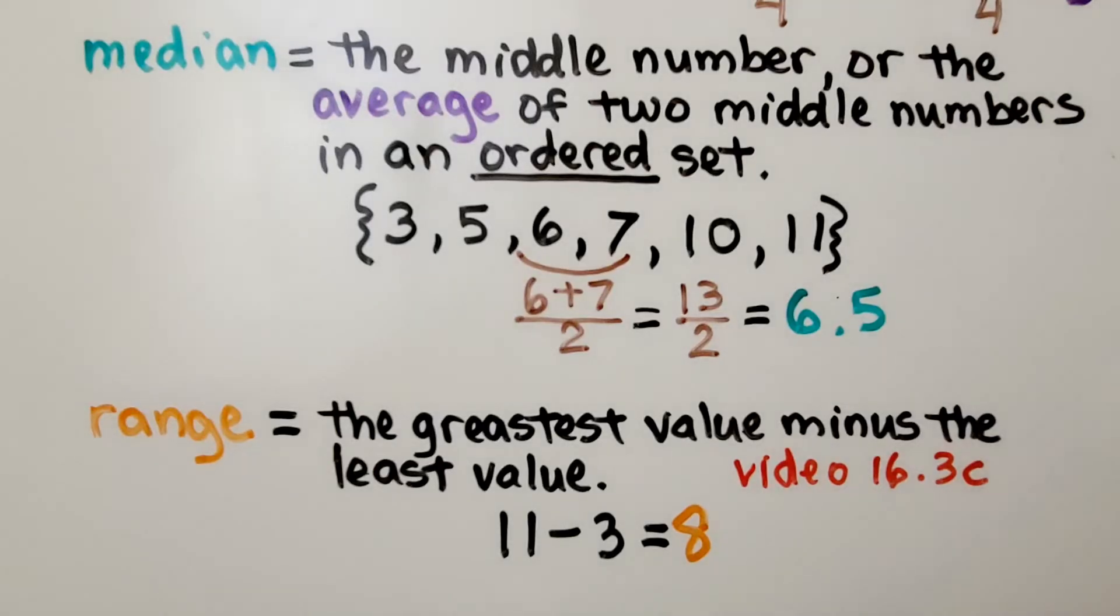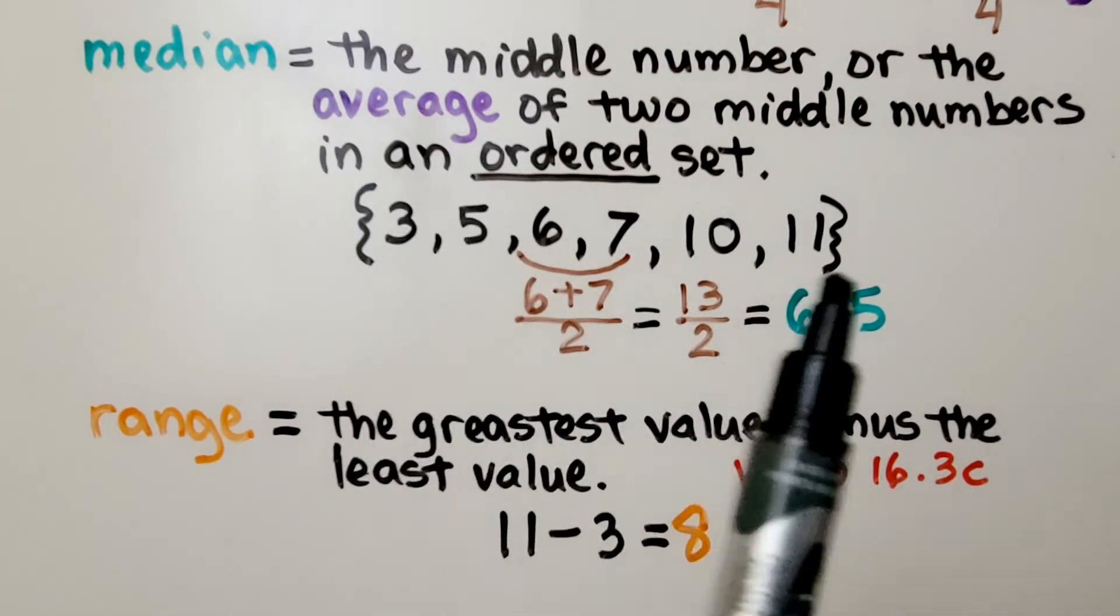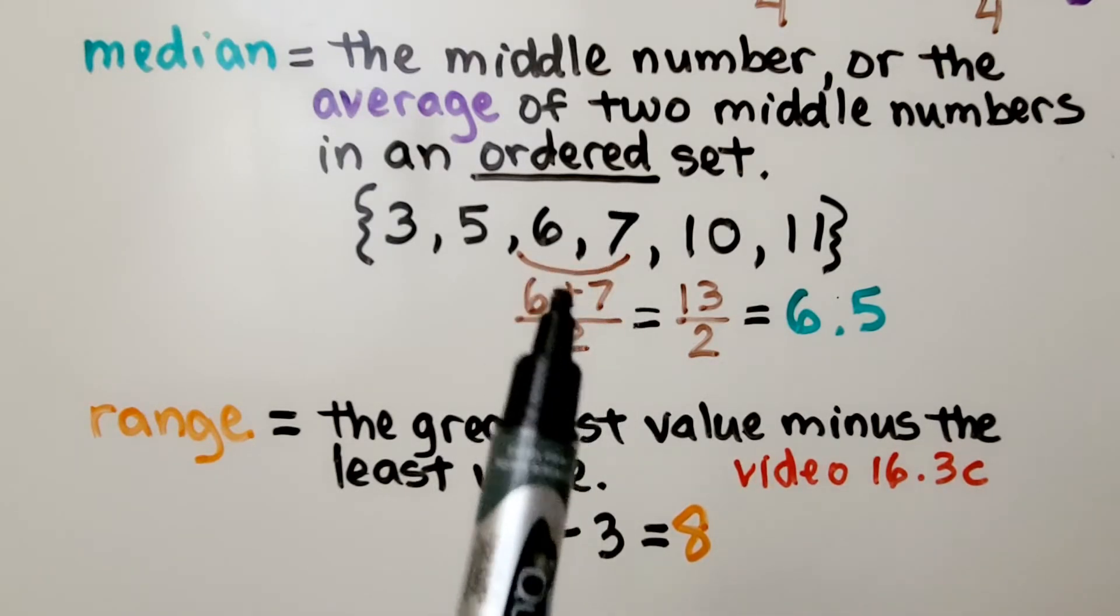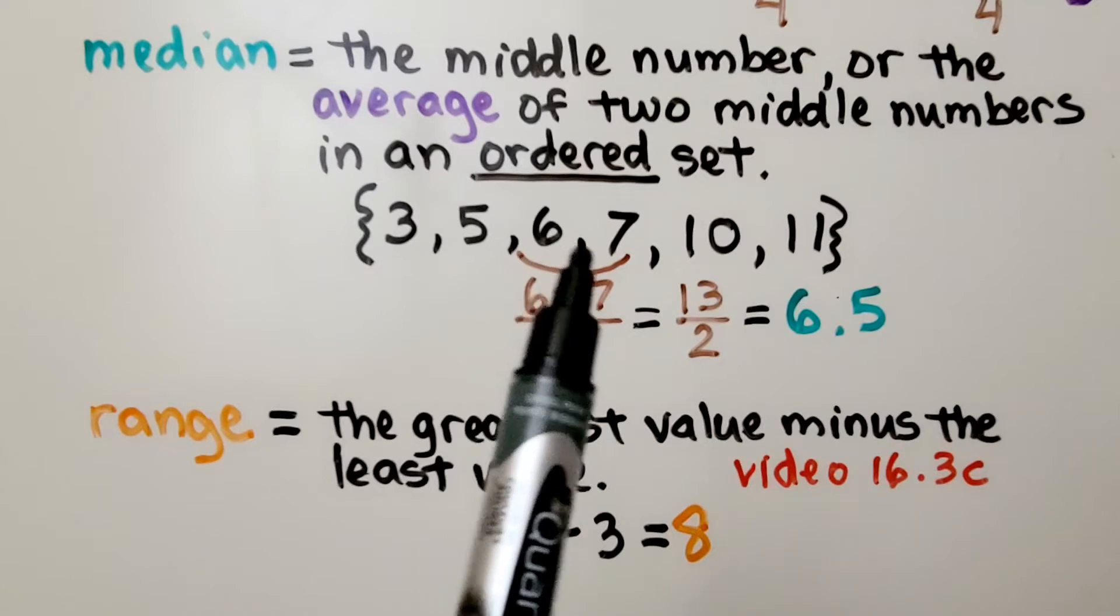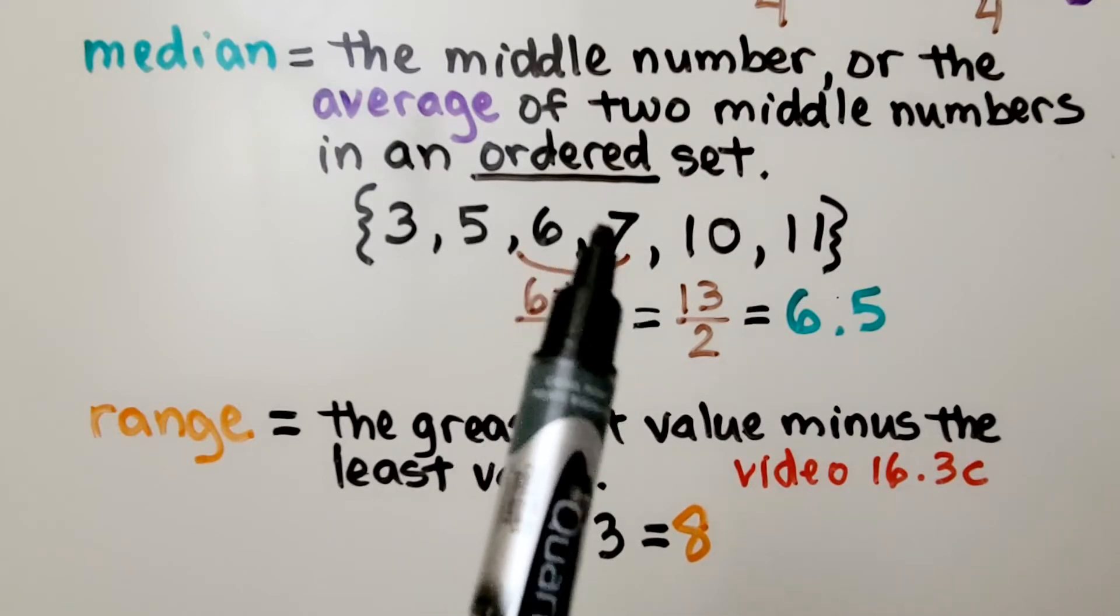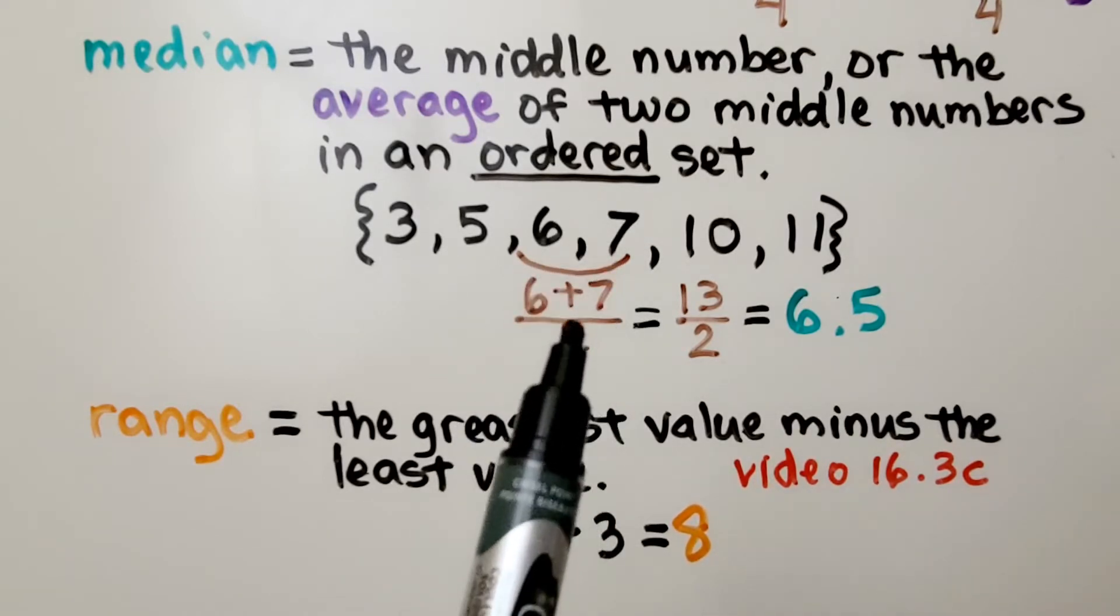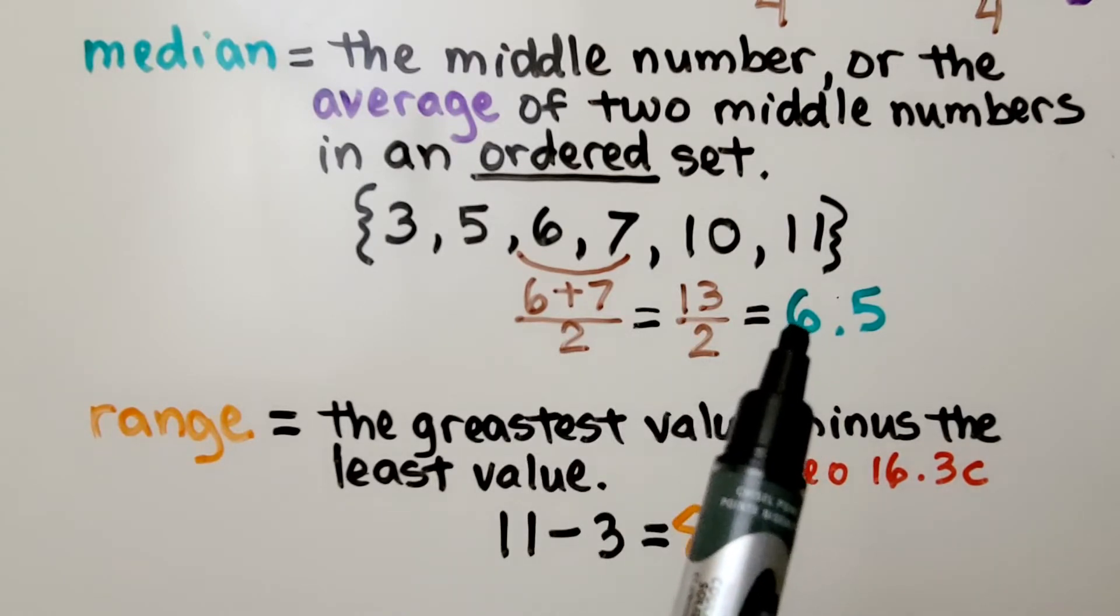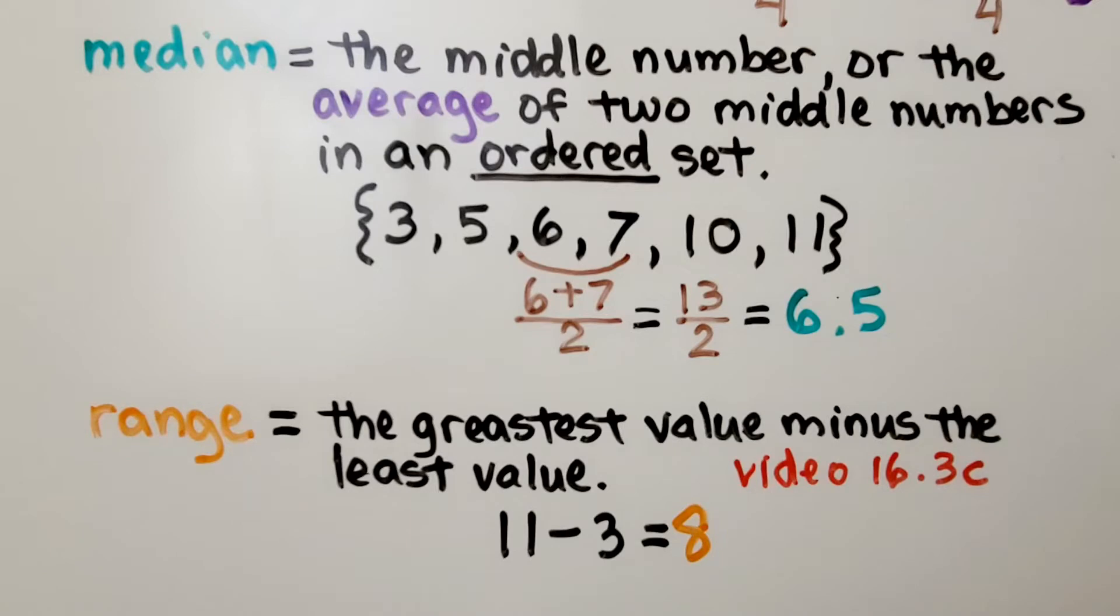The median is the middle number or the average of 2 middle numbers in an ordered set. If we've got an even amount of numbers, we have to find the 2 middle numbers and find the mean or average of those two. Because 6 and 7 are the 2 middle numbers, we add them and divide by 2. We have 13 divided by 2, so the median is 6.5.